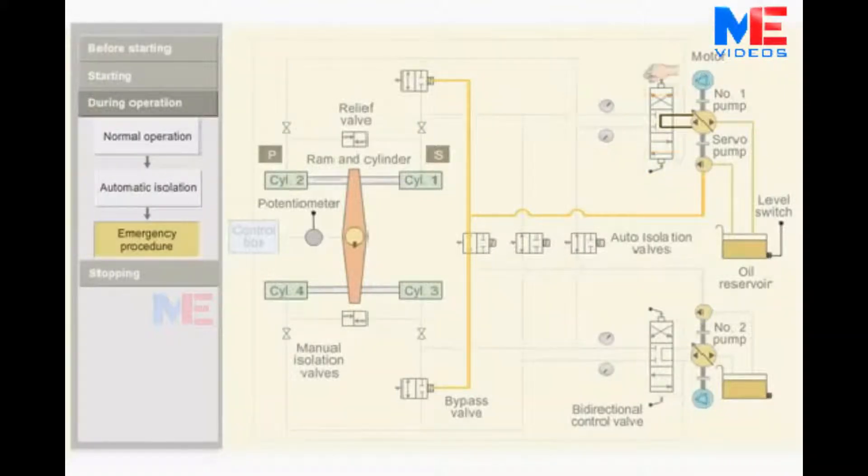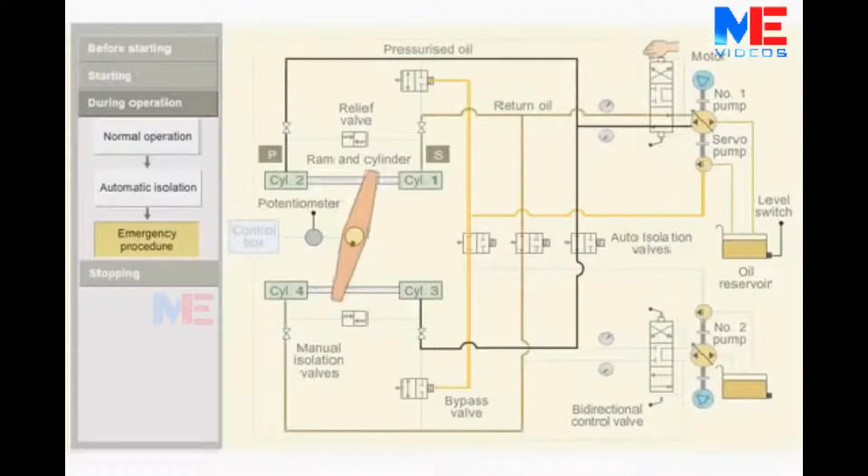When the forward side lever is operated, the bidirectional control valve moves towards forward side. The ram in turn moves the rudder to port side. When the desired rudder movement is achieved, the manual operator releases the lever and the valve comes back to its initial position.